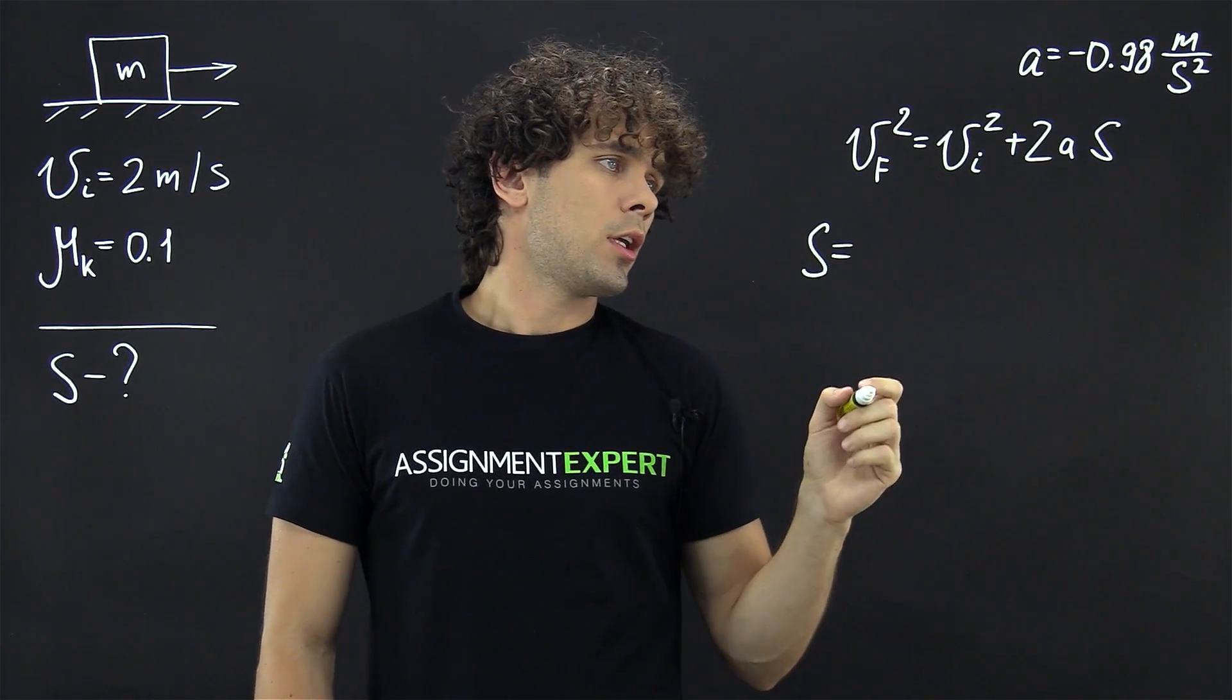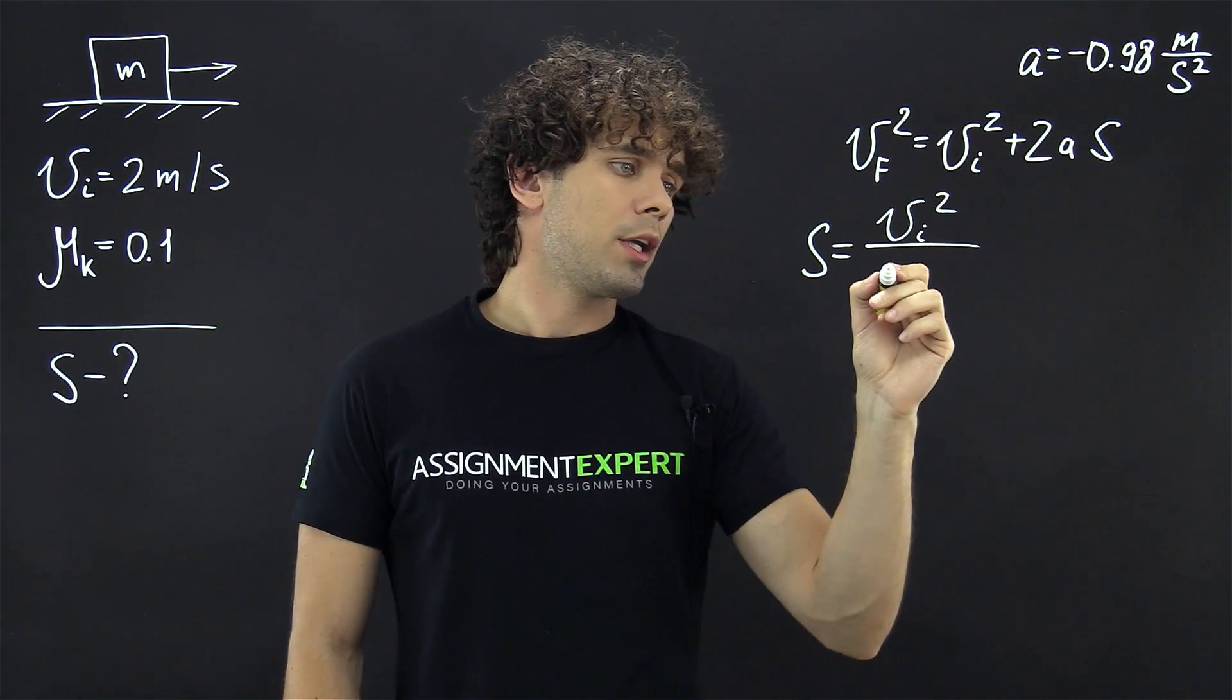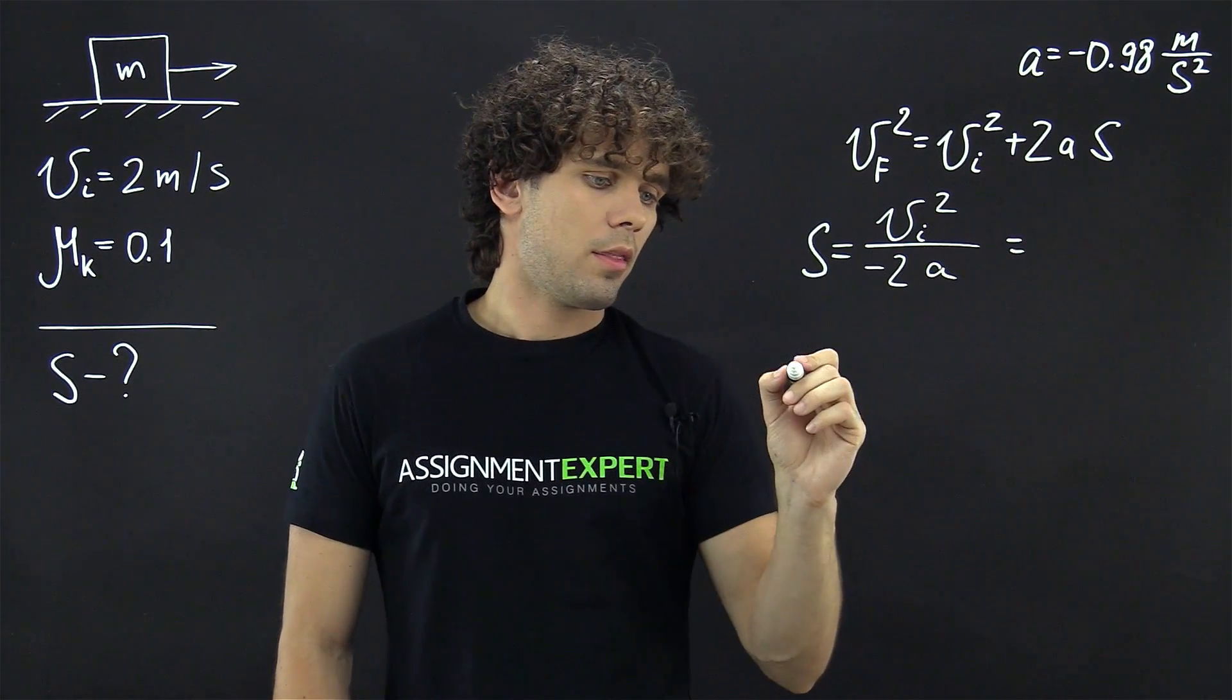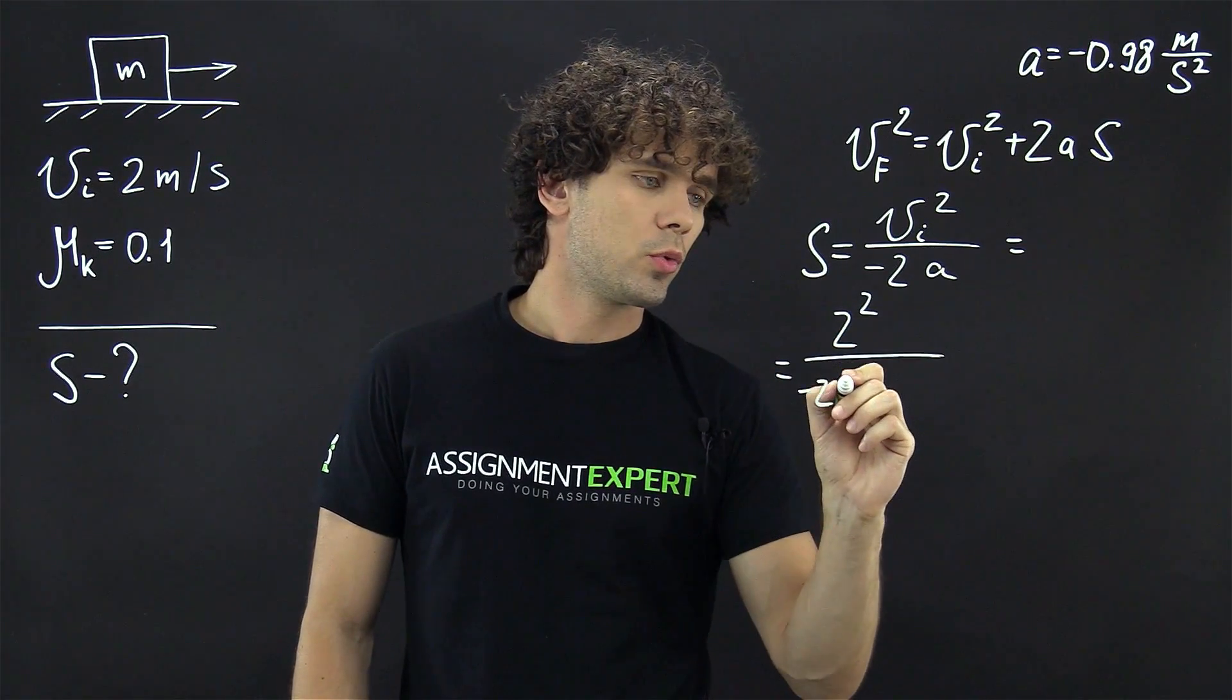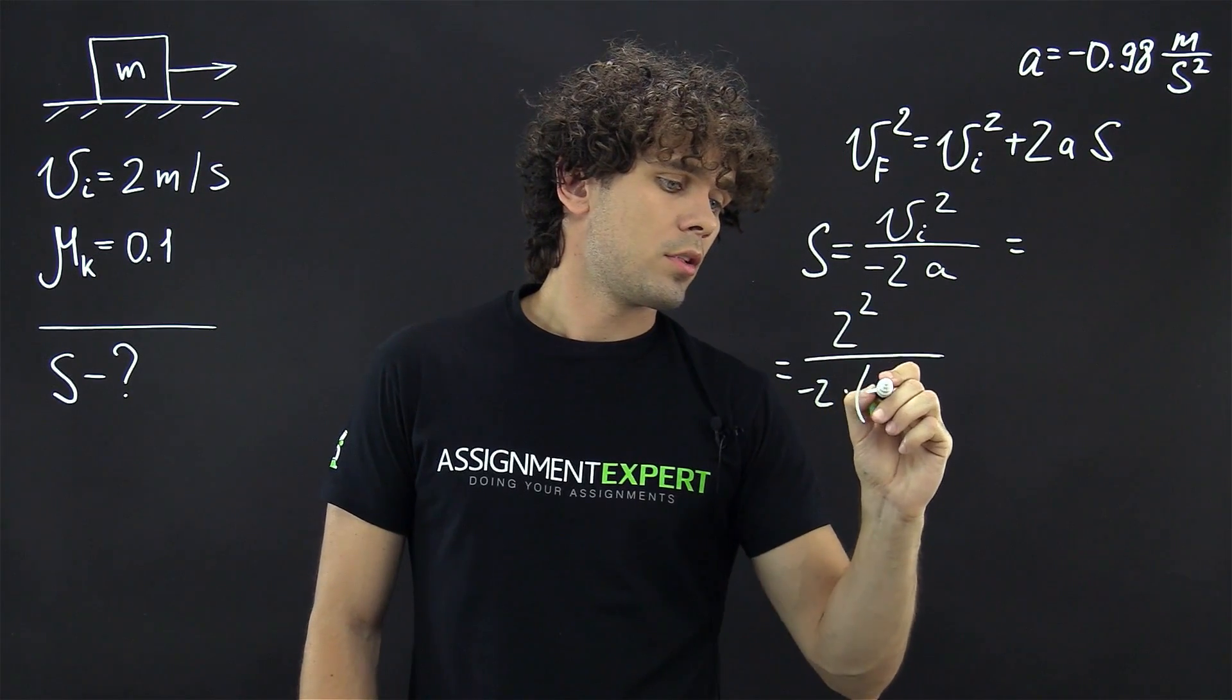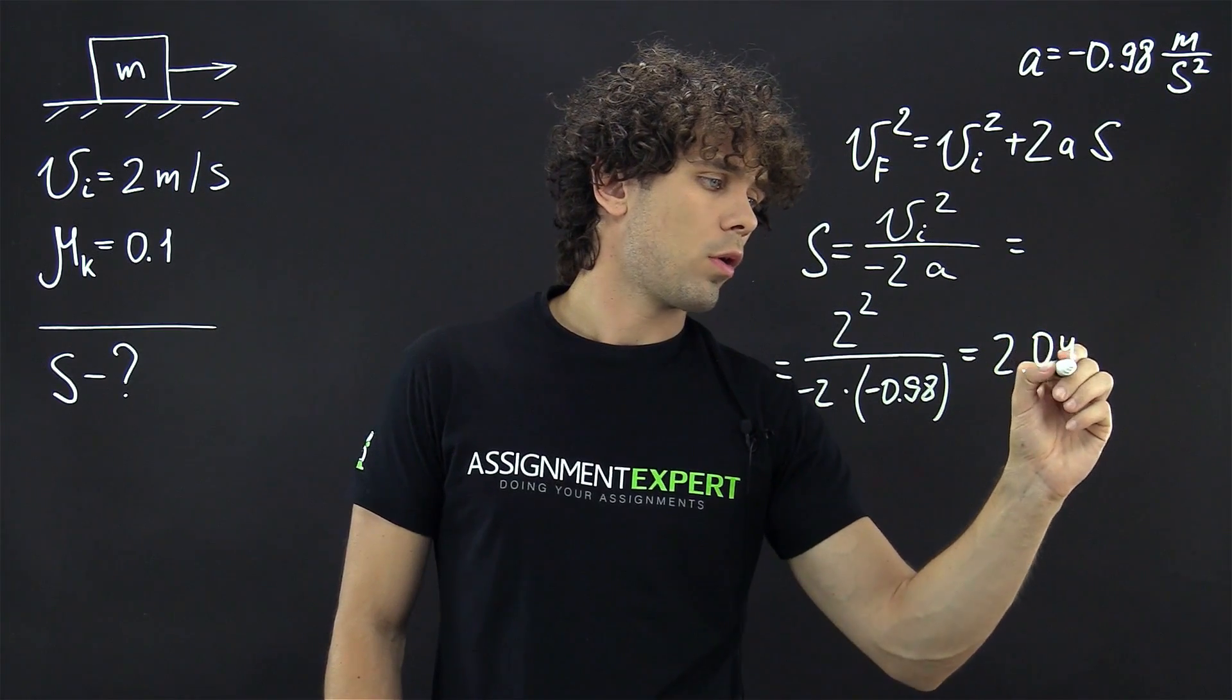From here, s equals v initial squared divided by negative 2a. And this gives us 2 squared over negative 2 times negative 0.98 and equals 2.04 meters.